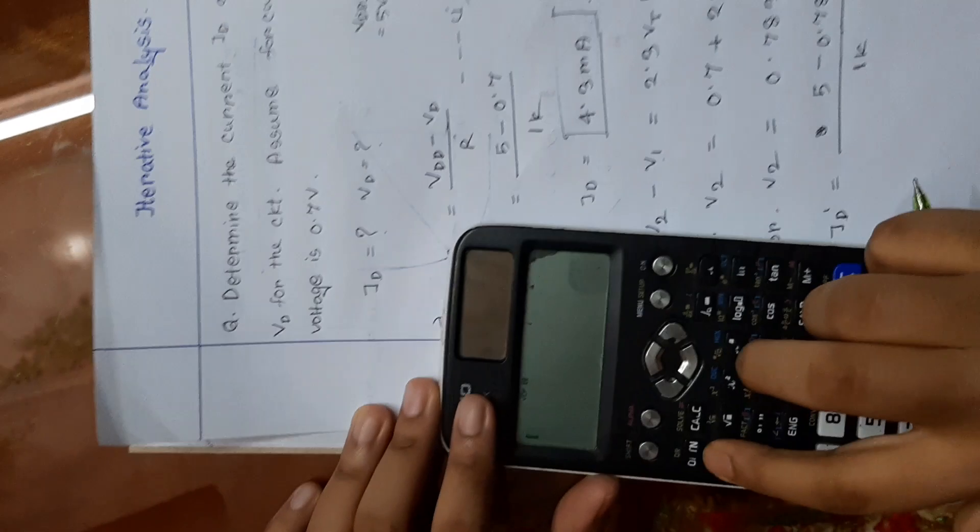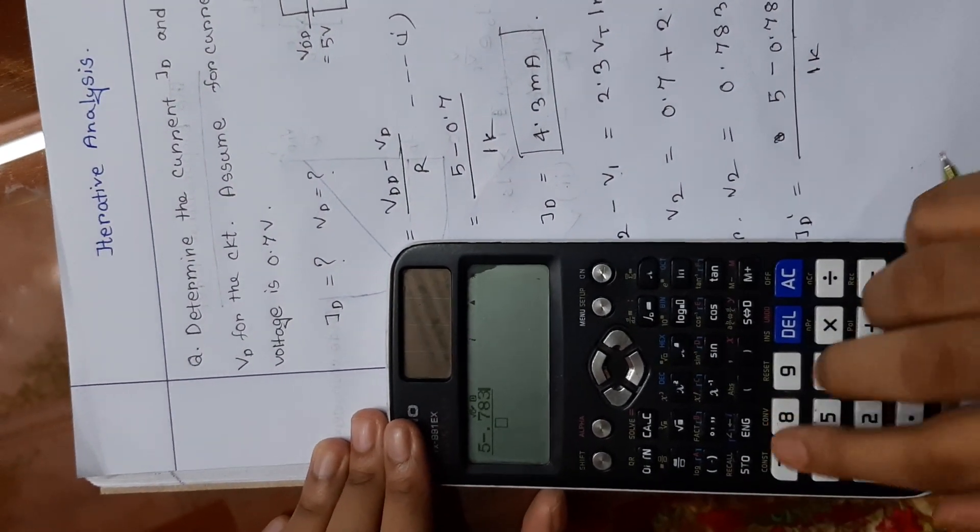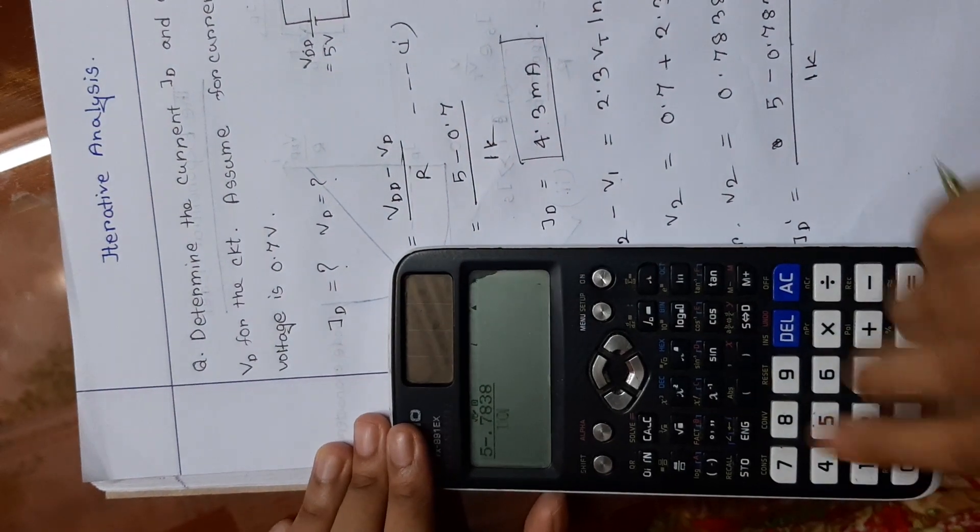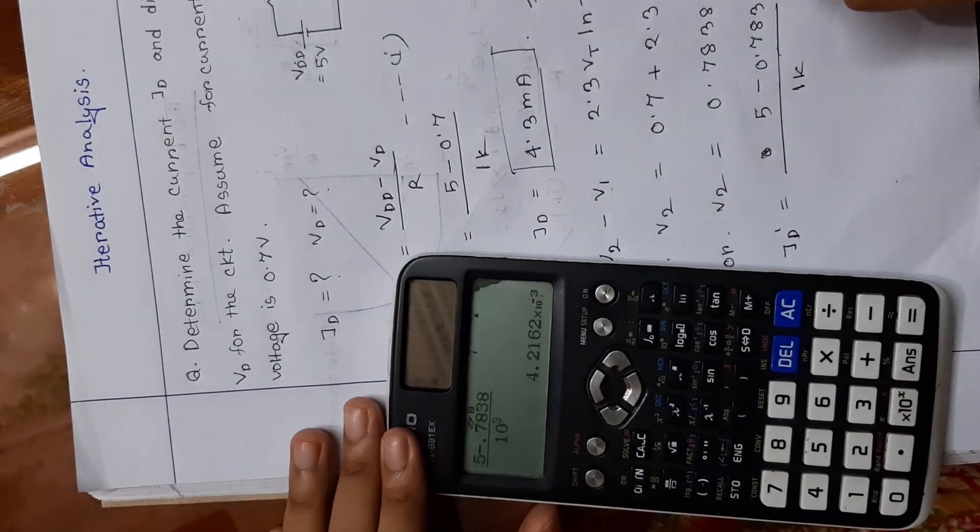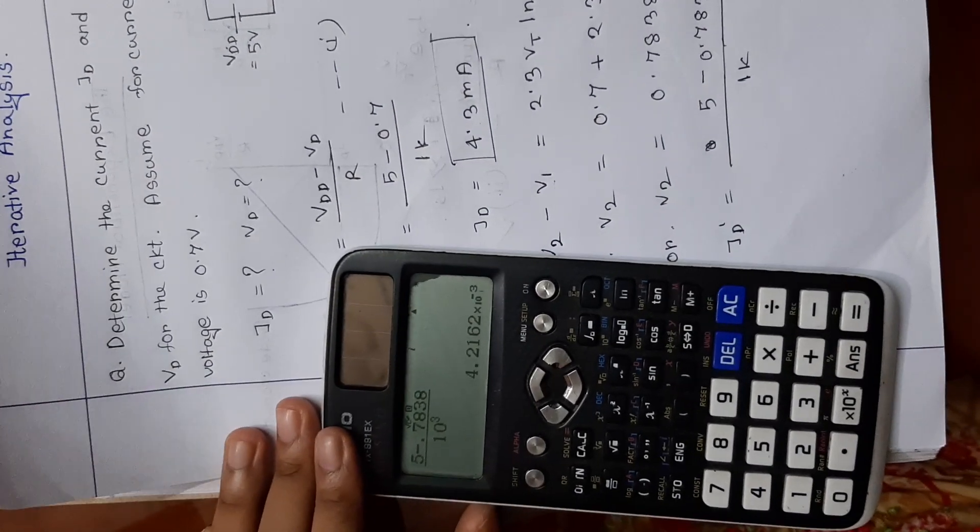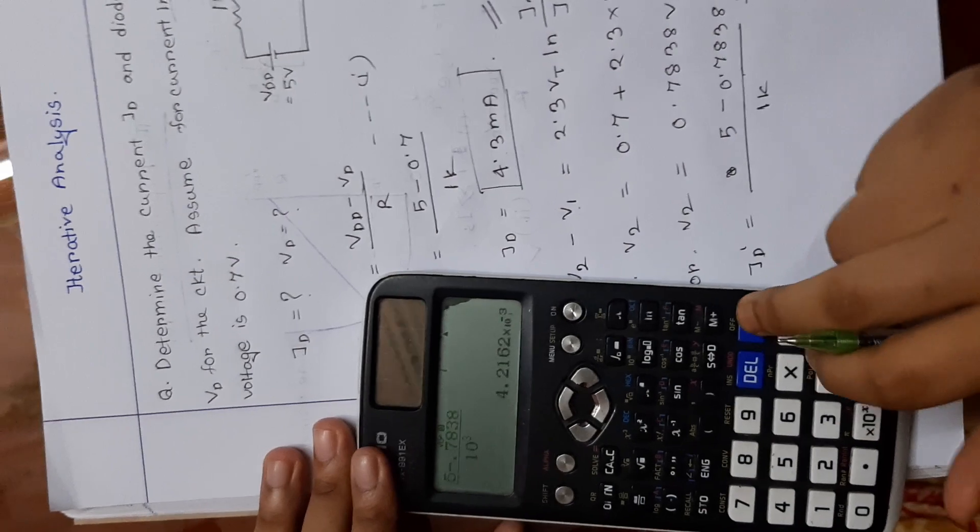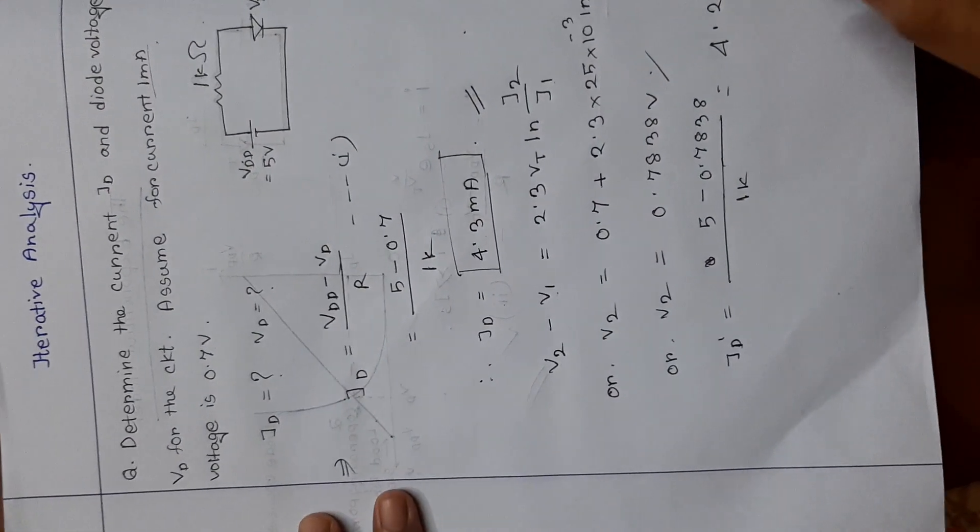So 5 minus 0.7838 volt divided by 1 kilo ohm.